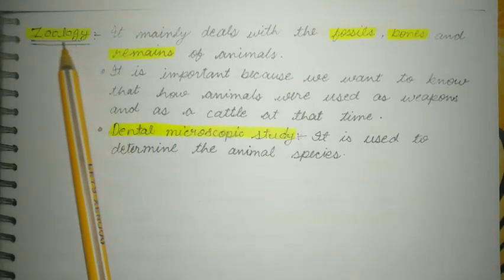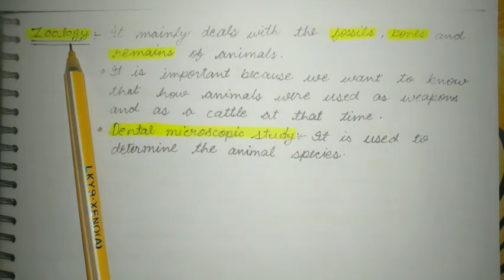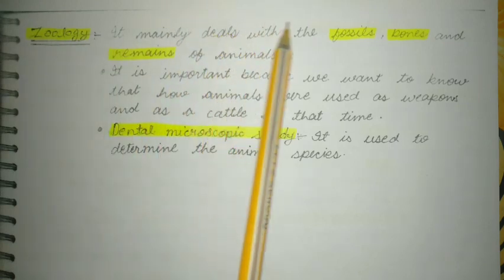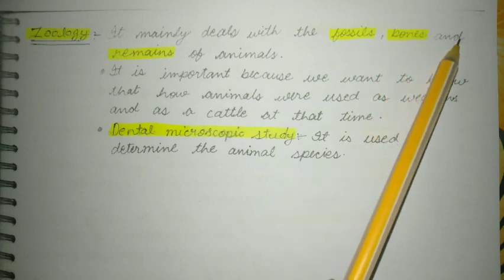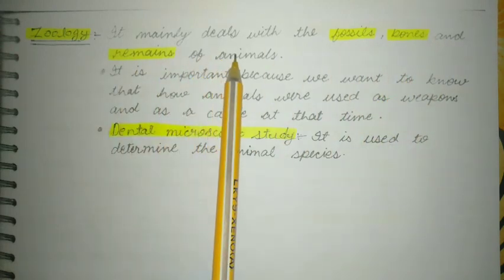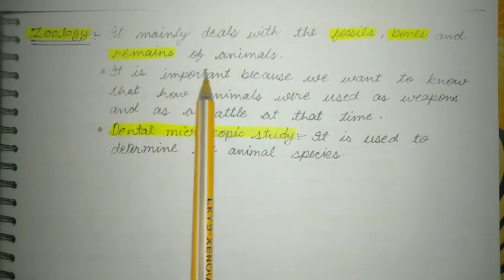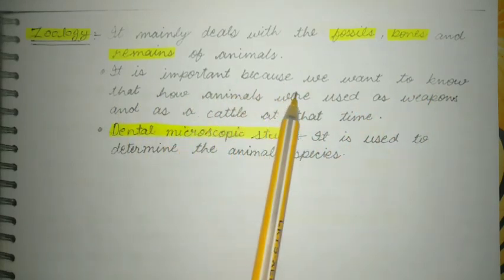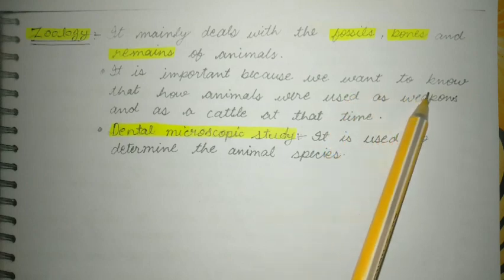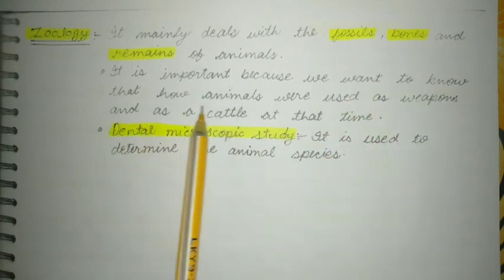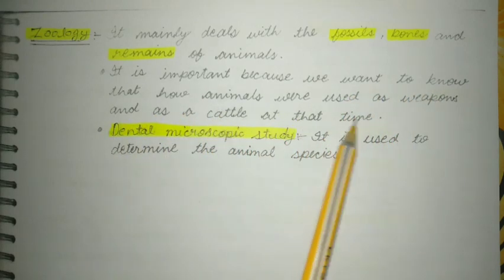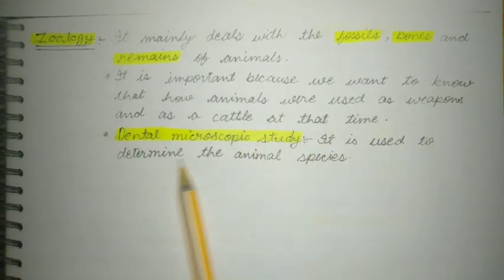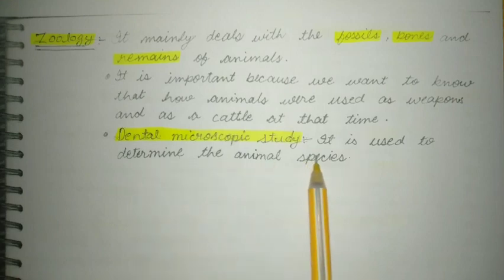Now we will talk about the relation of archaeology with zoology. It mainly deals with the fossils, bones, and remains of animals. It is important because it tells us how animals were used as weapons and as cattle at that time. Dental microscopic study is used to determine the animal species.